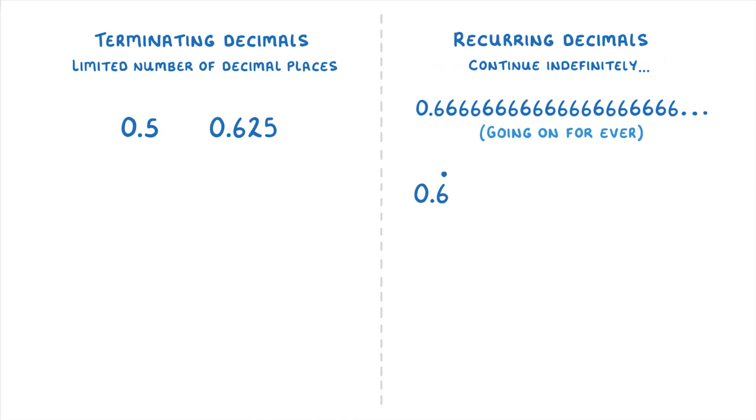For more complicated ones, like 0.123123123 and so on, it's the whole 1-2-3 part which is recurring. So we place the dots above the 1 and the 3, because the 1 is the first number that recurs and the 3 is the last number that recurs.